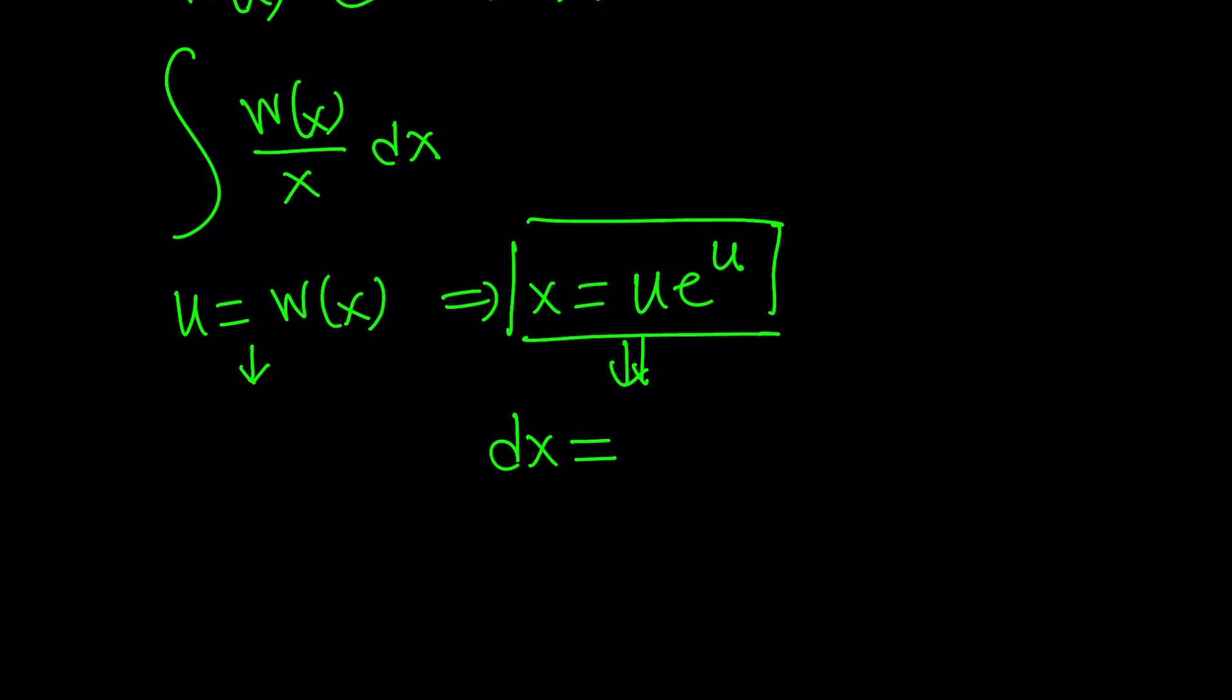So let's go ahead and differentiate both sides. dx would be the derivative of u e to the u multiplied by du, as you know by definition. So it's going to look like this, the derivative of u, which is going to be 1.